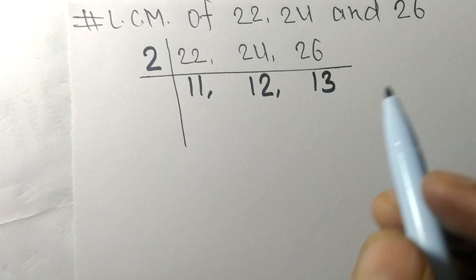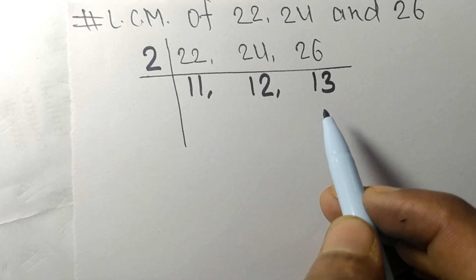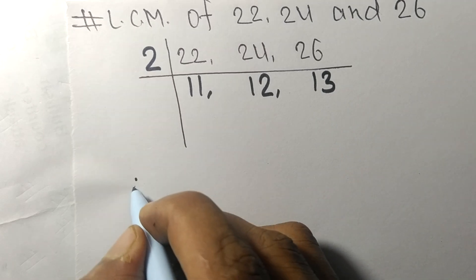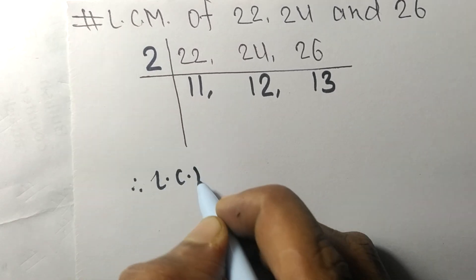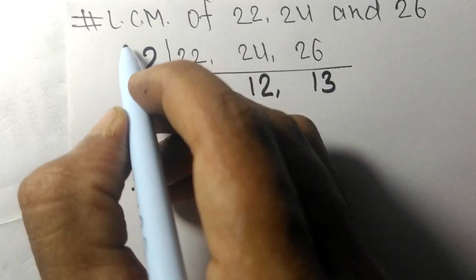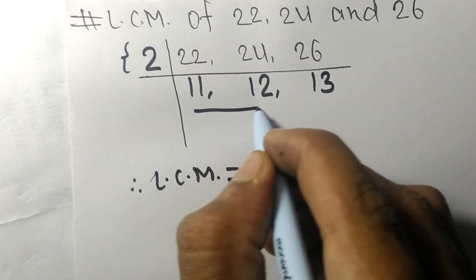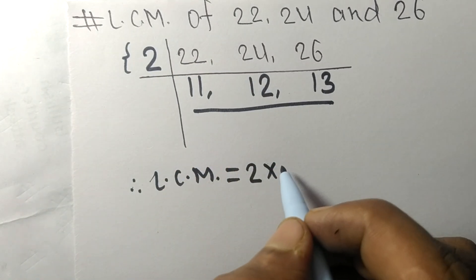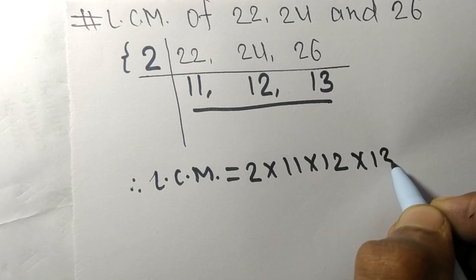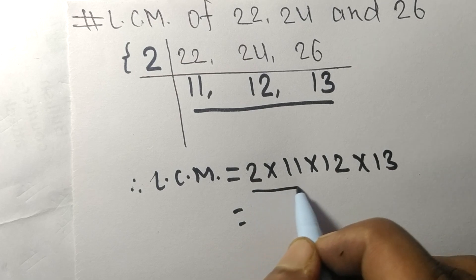Now the numbers 11, 12, and 13 are not divisible by the same number. Therefore, to find the LCM, from one side we take 2, and from the other side we have 11, 12, and 13. We multiply all these numbers together.